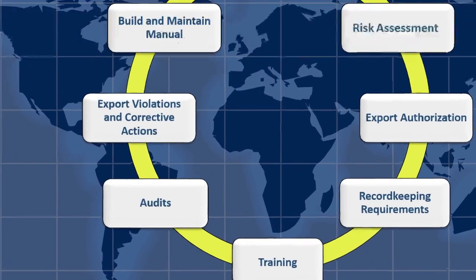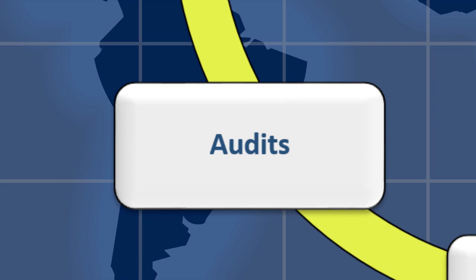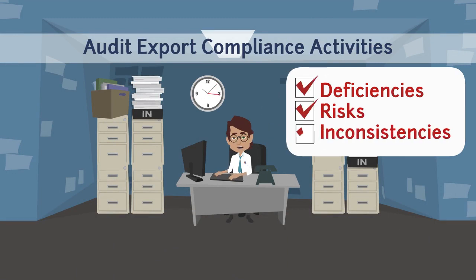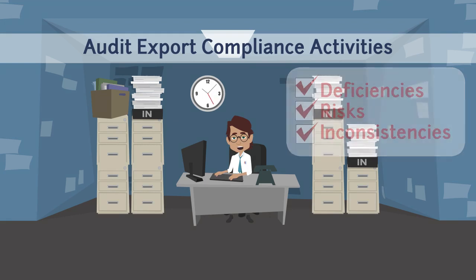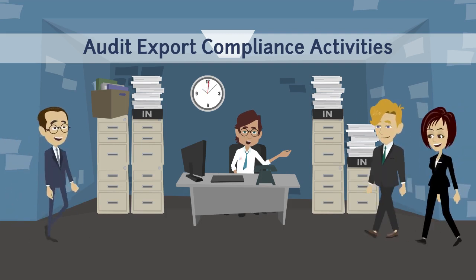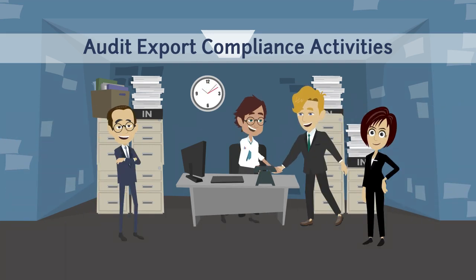Element six is Audits. Build an audit mechanism into your compliance program. The circular chart focuses on Audits, and the next scene changes to the male character sitting at a desk in a room with filing cabinets. The purpose of the audit is to identify compliance deficiencies, risk, and inconsistencies between your company's stated exporting policies and its actual practices. If resources allow, consider using a third-party auditor for an unbiased evaluation of your organization's compliance program. Three people wearing suits walk into the room representing the third-party auditors.